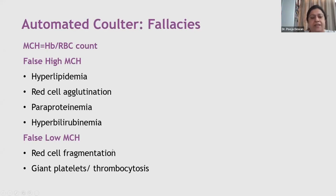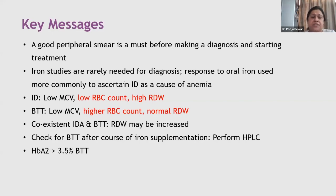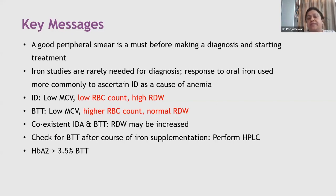Key messages from Cases 1 and 2: A good peripheral smear is a must. Iron studies are rarely needed for diagnosis — only to distinguish difficult cases or assess suboptimal response. Iron deficiency is associated with low RBC count and high RDW; thalassemia trait is associated with higher RBC count and normal RDW. In our setting, both conditions can coexist. Always check for beta-thalassemia trait only after iron supplementation. HbA2 more than 3.5% is suggestive of beta-thalassemia trait.